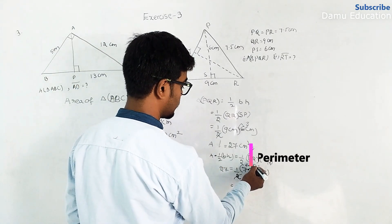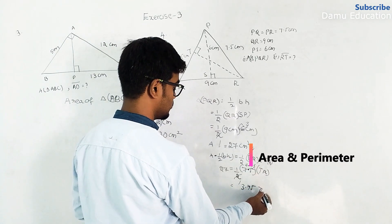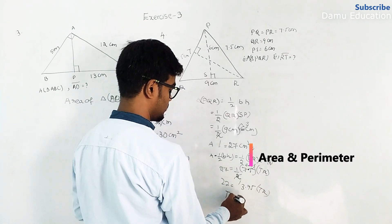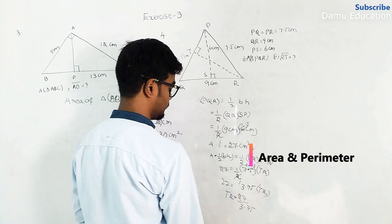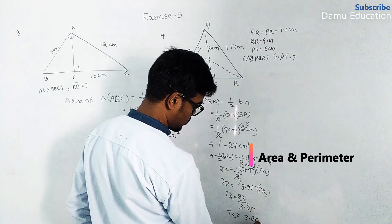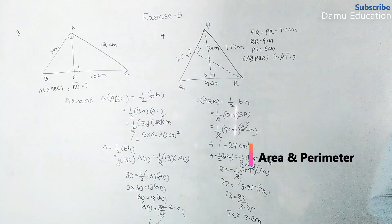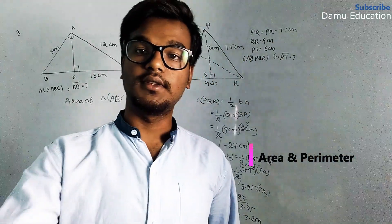So 3.75 times TR equals 27. So TR will be equal to 27 divided by 3.75. Then TR will be equal to 7.2 cm. Thanks for watching this video.